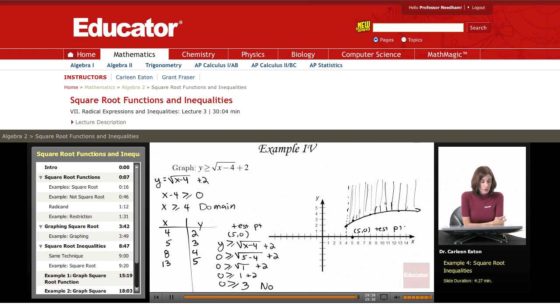So to graph this inequality, I graph the corresponding equation, first finding excluded values—values that were less than 4 are excluded—then using values that are allowed to plot points, and then using a test point and finding that my test point is not part of the solution set down here. So I went ahead and shaded it up there. So that concludes this lecture for educator.com and thanks for visiting.